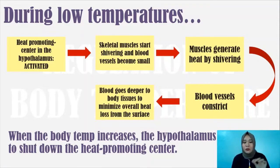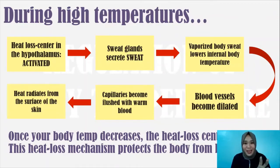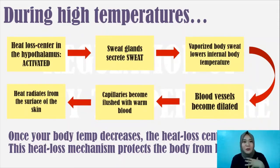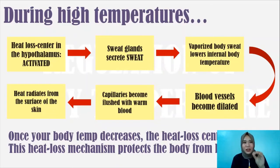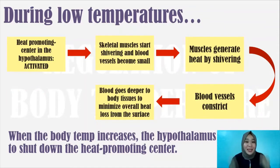The hypothalamus is then triggered to shut down the heat promoting center — balance has been achieved. So to recap: when there is high temperature, the target is to release excess heat; otherwise, cells, tissues, and organs could overheat, which is not good for the organism. When there is low temperature, the target is to promote heat to the different parts of the body — to warm up the body.